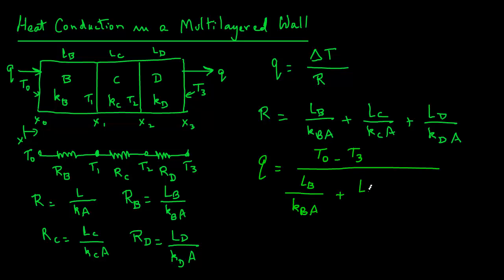And in the denominator, we should have the sum of all the resistance values, all the thermal resistances. So we have LB over KBA plus LC over KCA plus LD over KDA. So this is our equation to find out the rate of heat transfer in a multilayer system.